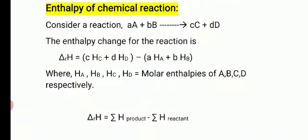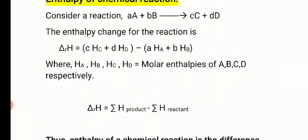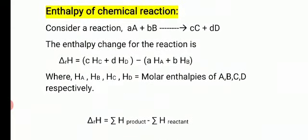With that, the equation can be written as: ΔrH = summation of enthalpies of products minus summation of enthalpies of reactants. In upcoming videos, we'll solve numericals on enthalpies of reaction, including enthalpy of formation and enthalpy of combustion — these involve simple addition, subtraction, or multiplication.